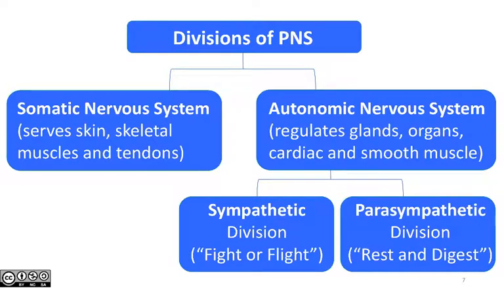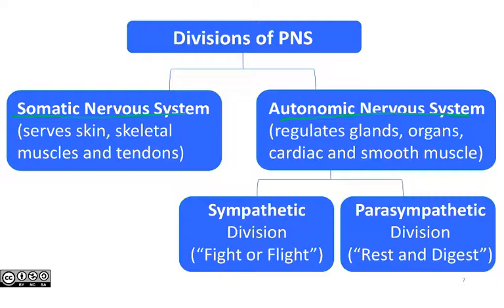Thinking back to the concept map of the overall nervous system organization, the peripheral nervous system includes the somatic nervous system — which serves skin, muscle, tendons, and skeletal muscle — and the autonomic nervous system, which serves glands, organs, cardiac muscle, and smooth muscle. The autonomic has two divisions: the sympathetic division, which is the fight-or-flight response, and the parasympathetic division, which brings your body systems back to a reasonable baseline after the stress response is over.